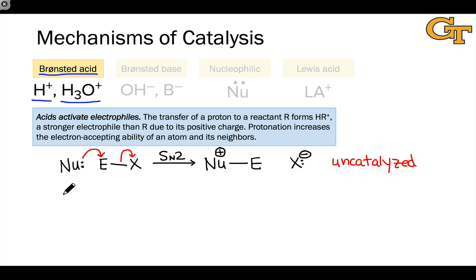What happens when we introduce an acid catalyst into the mix? I'm going to redraw the reactants, the nucleophile, the electrophile linked to the leaving group. And now I'm going to introduce H3O+, a typical Bronsted acid catalyst.